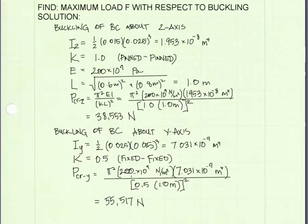For buckling about the Y-axis, our K-value, our effective length factor, is going to be 0.5 because we were told in the problem that about the Y-axis, the member is fixed-fixed, and the associated K-value is 0.5. Substituting this information into our critical buckling load equation, we get that a buckling load of 55,517 Newtons is necessary to buckle the member about the Y-axis. So it looks like buckling about the Z-axis controls.